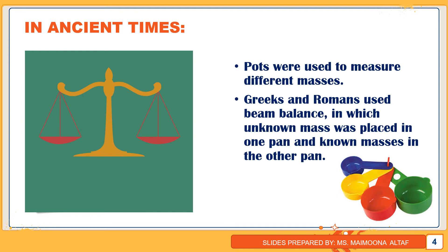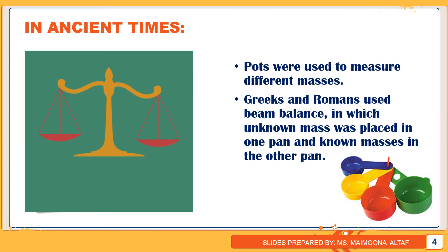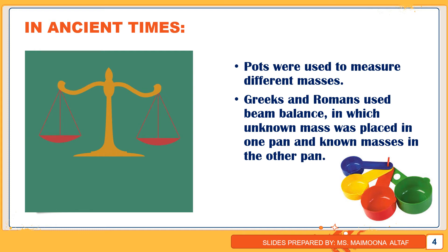In this Beam Balance, there are two pans. In the first pan, the unknown object is placed. In the second pan, known standard masses are placed. When the two masses are equal, the beam balances. This way we can use the beam balance — unknown objects are measured by comparing them with the mass of known standard objects.